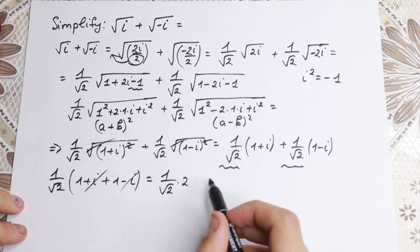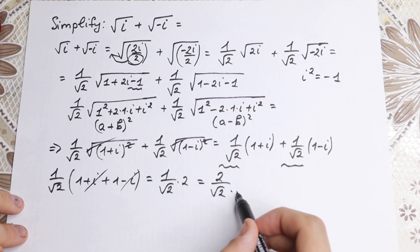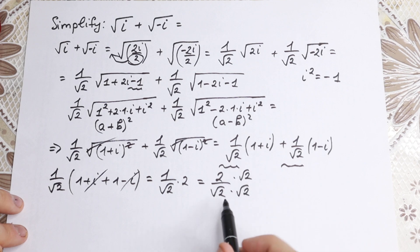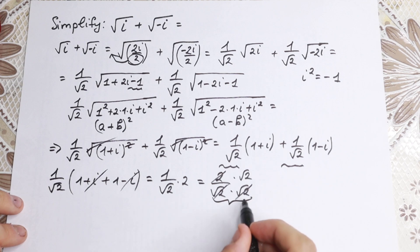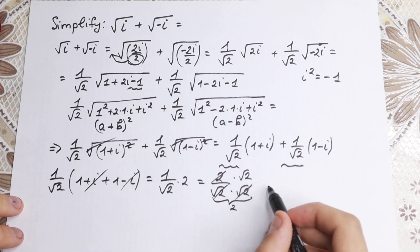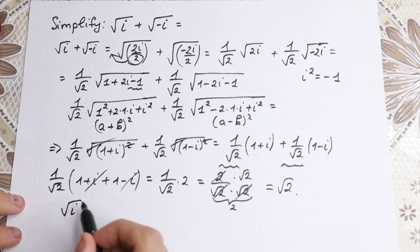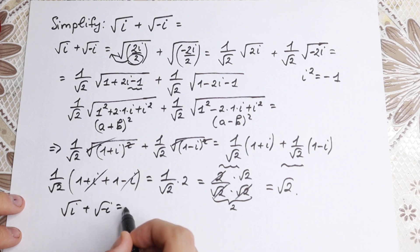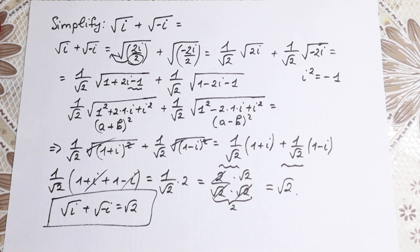We can simplify this a little bit: 2 over square root of 2. Multiplying numerator and denominator by square root of 2, the denominator becomes 2, and the 2s cancel, giving us the final answer: square root of 2. So, square root of i plus square root of minus i equals square root of 2. Thank you so much for watching, and see you in the next videos!